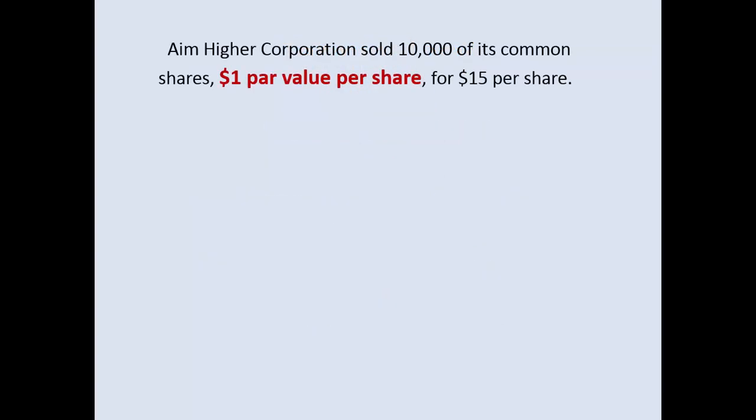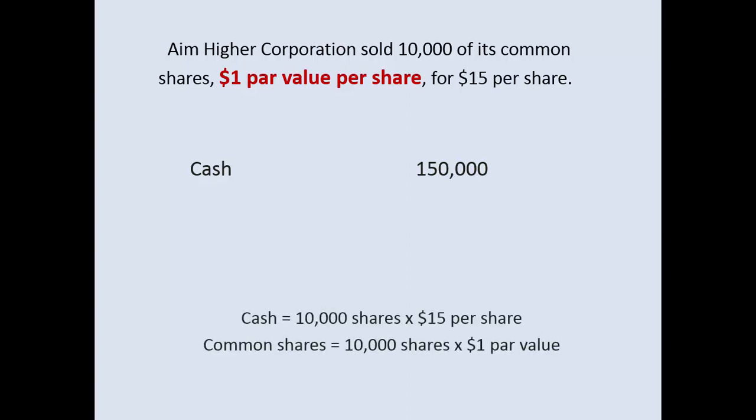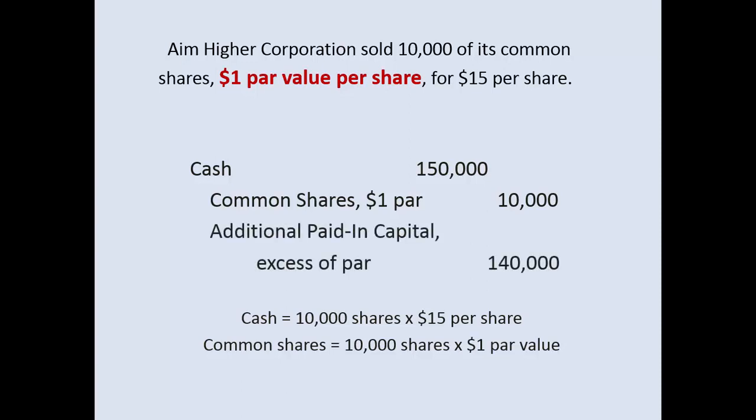Let's look at a quick example. AIM Hire Corporation sold 10,000 of its common shares with a $1 par value per share. The market price when it sold was $15 a share. So you record the cash coming in. The common stock is an equity account with a normal credit balance, but it is only recorded at its par value. Then there will be another account — additional paid-in capital, or APIC, excess of par — which is an account name within the broad category of paid-in capital or contributed capital.